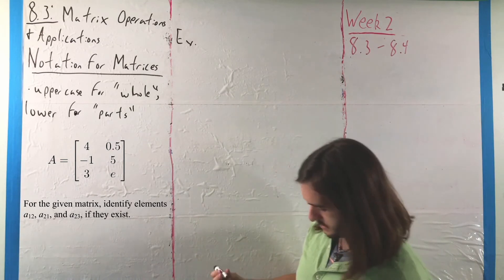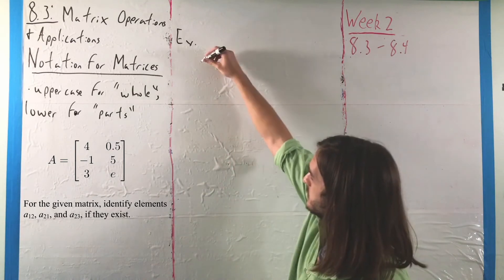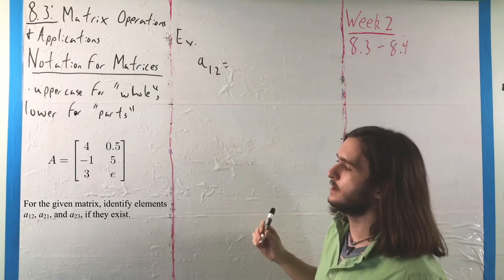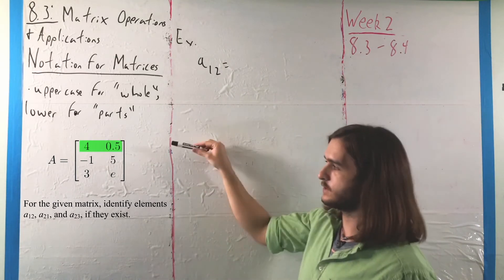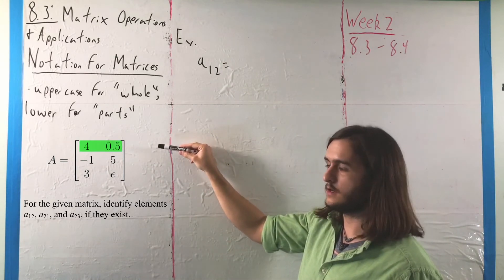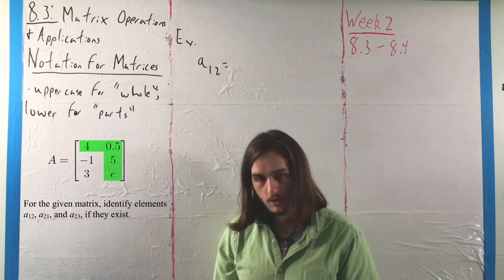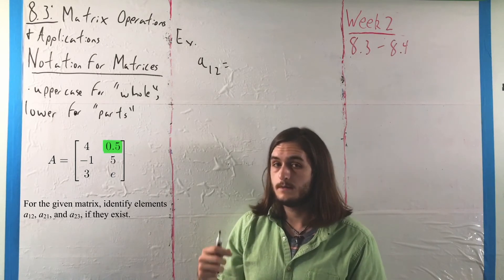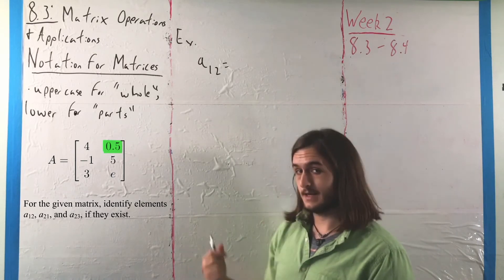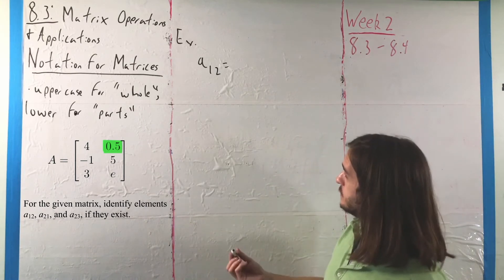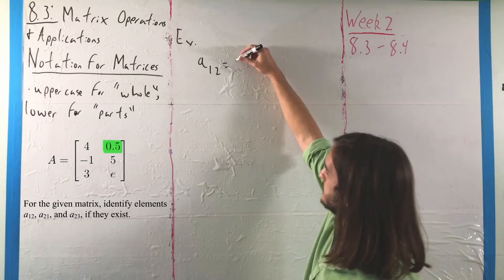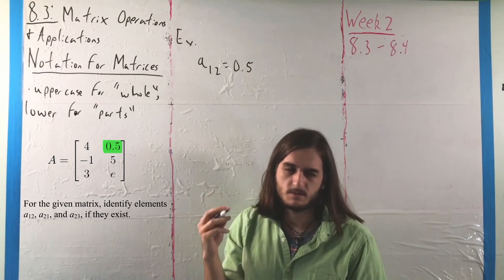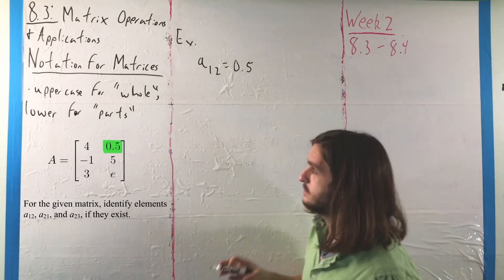When looking for a12, the order one-two identifies that we want the first row and second column, which is the top right corner. So a12 is 0.5.